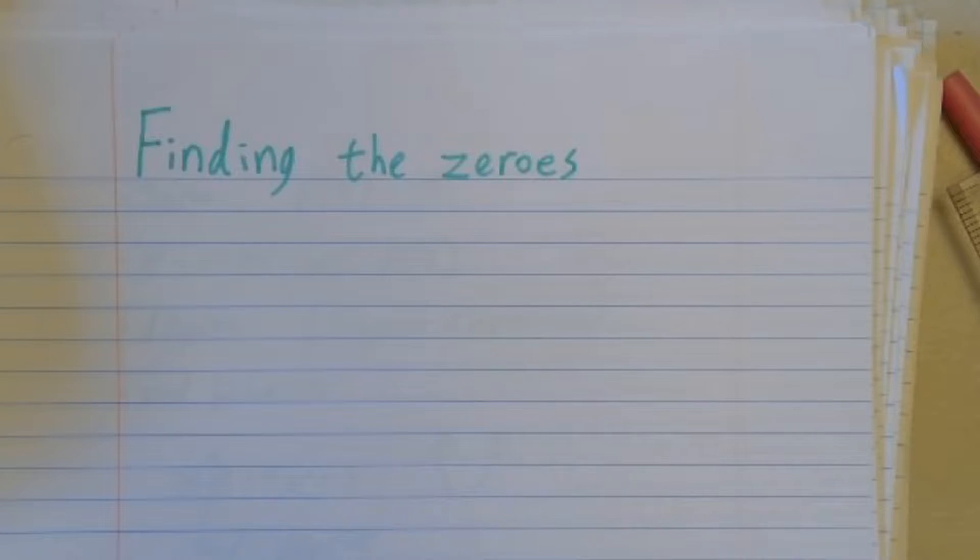Some of you are having questions about how to find the zeros and what that means. So I'm going to go through a few different examples of what we're talking about when we're talking about finding the zeros and what we're doing.